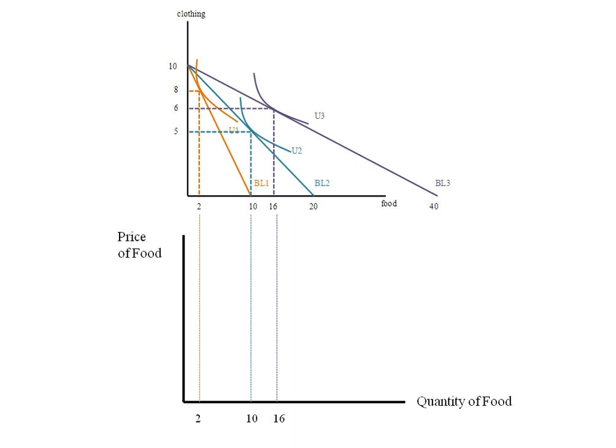We're going to drop down the quantities that we found from our optimal bundles. So the 2 drops straight down and gets labeled, same with the 10 and the 16.